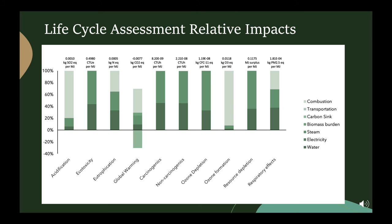We were able to quantify the different emissions associated with environmental sustainability and found that the greater contributors to environmental impact are due to combustion of the fuels produced, the steam used for separation, and water. Notice that in the global warming potential category, we account for sequestration of emissions into the biomass at the time of cultivation. Our results are comparable to the total emissions of similar ABE fermentation processes and are well below the impacts associated with conventional fuel production.